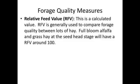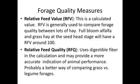Other quality measures you'll see on a forage test result include the relative feed value, which is a calculated value generally used to compare forage quality between lots of hay at something like a hay auction. Full bloom alfalfa and grass hay at seed head stage both have a relative feed value of around 100. A newer term, relative feed quality, actually uses digestible fiber in the calculation and may provide a more accurate indication of animal performance — it's probably a better way of comparing across forages, particularly when looking at a grass versus a legume.